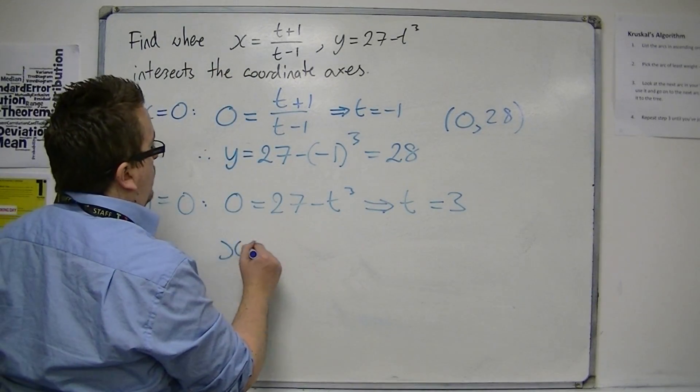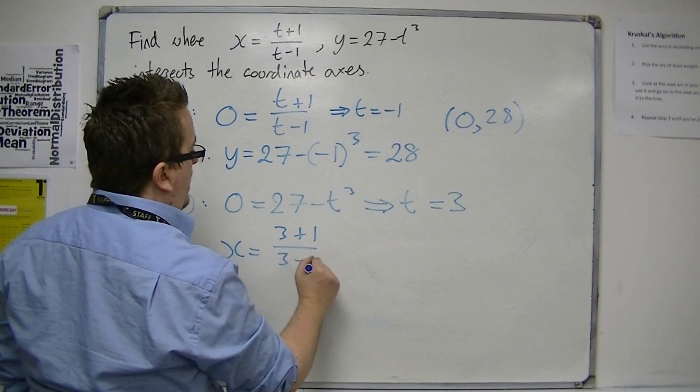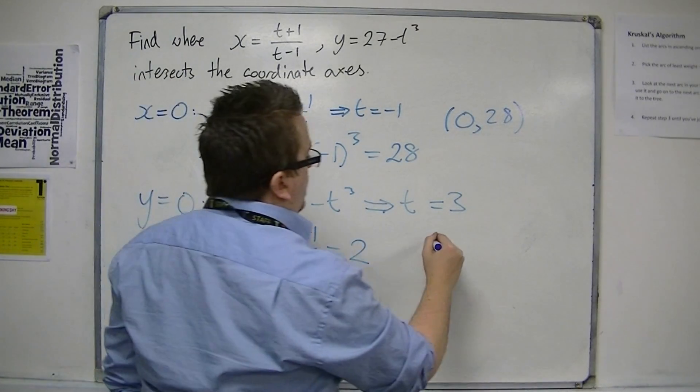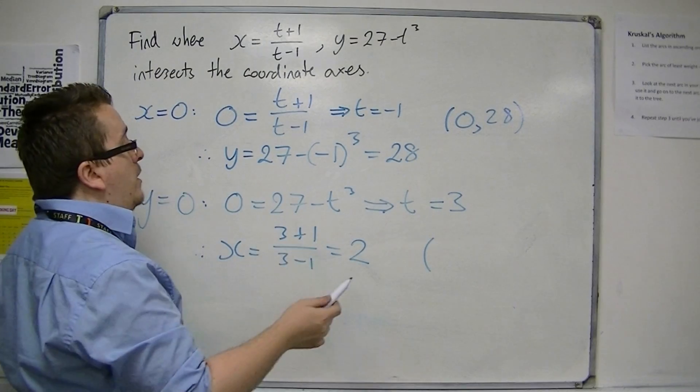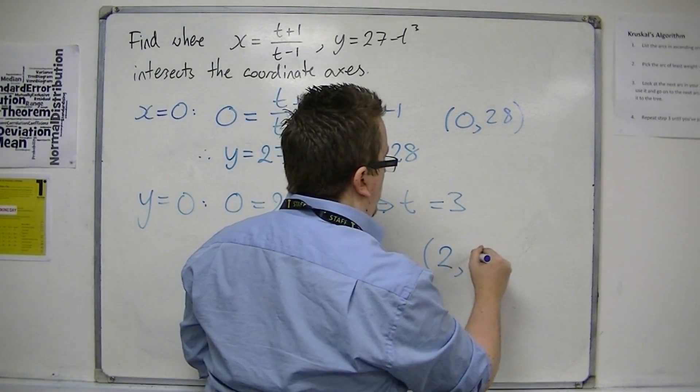Then we can substitute that into the x equals. So x equals 3 plus 1 over 3 minus 1. So that's 4 over 2, so that's 2. And so we have the curve crossing the x axis at 2, 0.